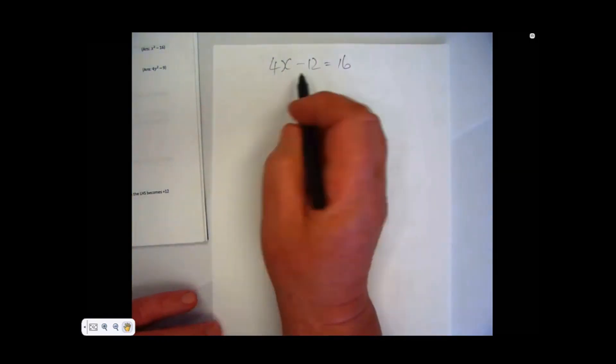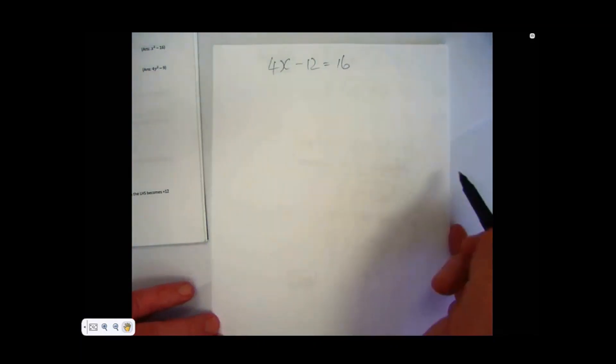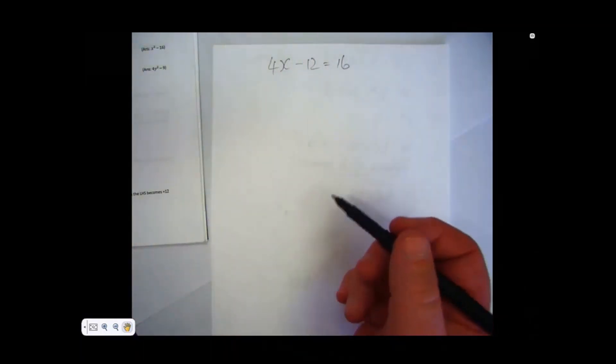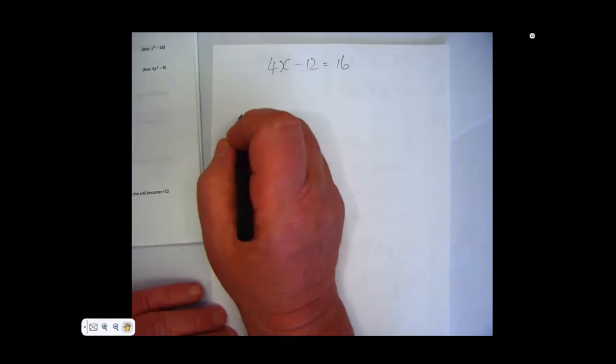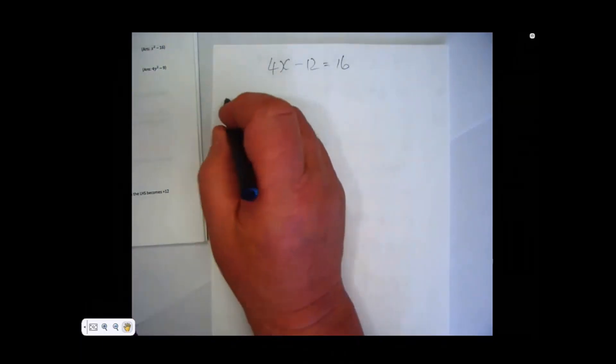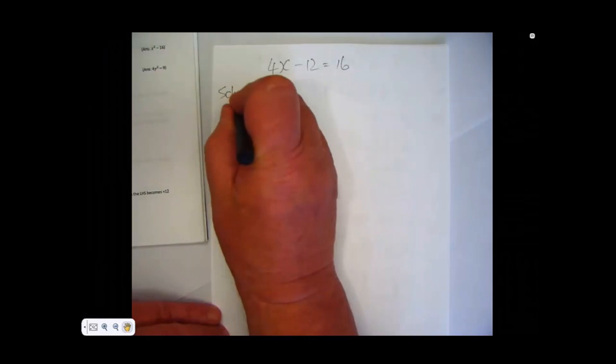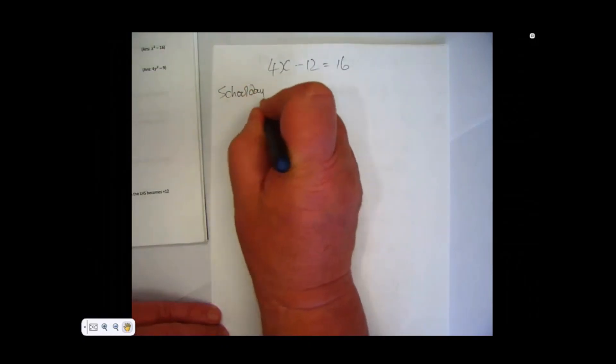That's the first sentence that's under the heading. So the example that we have here, very simple example, but we can work through it nice and simply, is this one. So 4x - 12 is 16. You may recall at school, from school days, let's go back a few years.